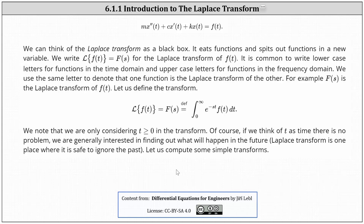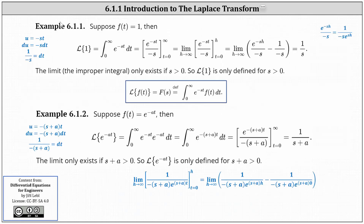Now let's compute some Laplace transforms. Let's begin with f of t is equal to one. Using our definition in the blue box, we have the Laplace transform of one is equal to the integral from zero to infinity of e to the power of negative st times one dt. Of course, we can drop the one.